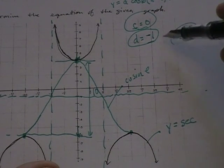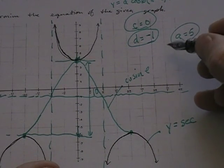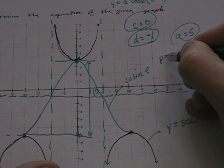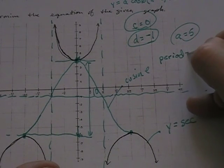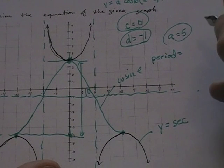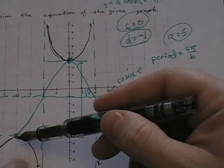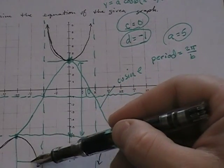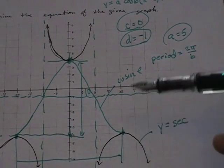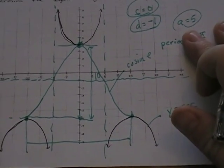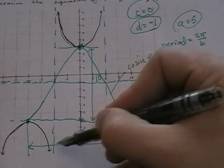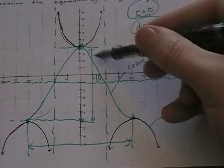So I've got c, d, and a. The last thing I need is b, and b is really easy. The period of sine and cosine and cosecant and secant is 2 pi over b, and the period is how long it takes to get from here to here, from a peak to a peak, or a valley to a valley.